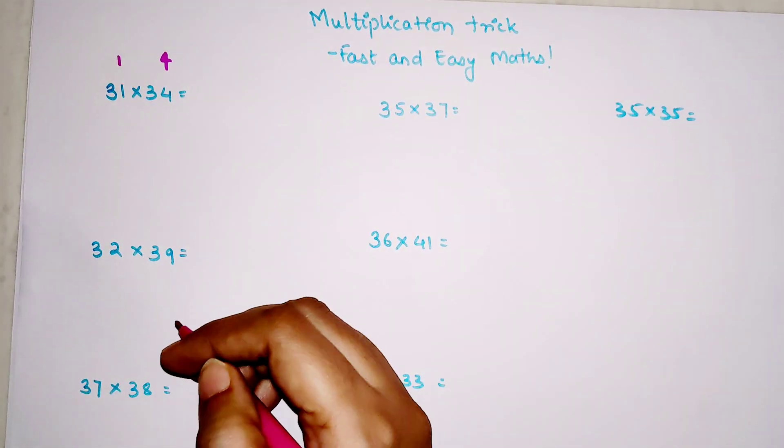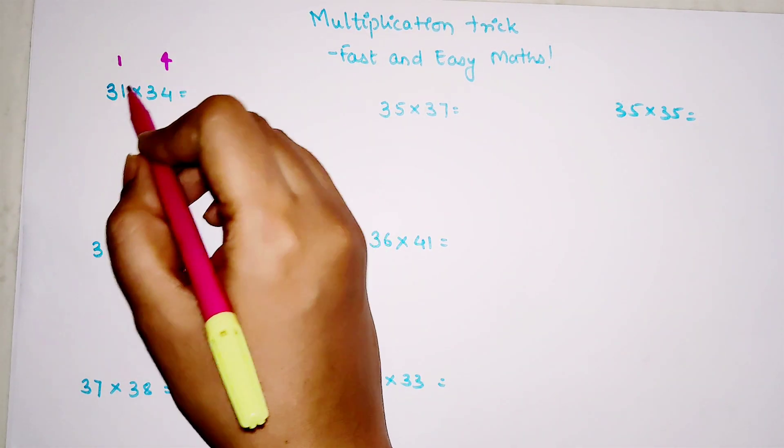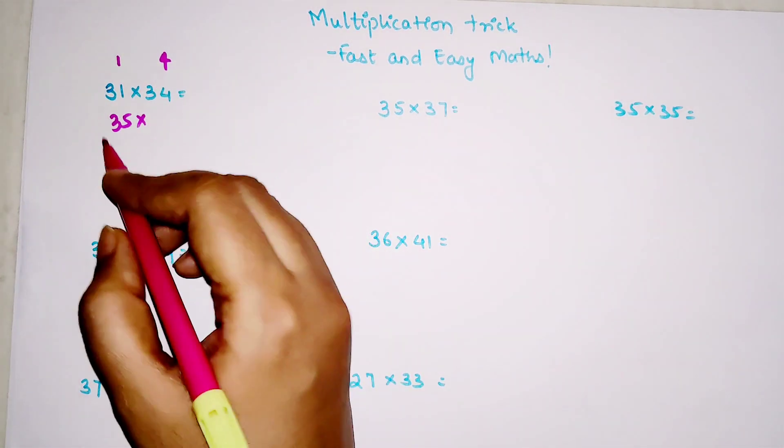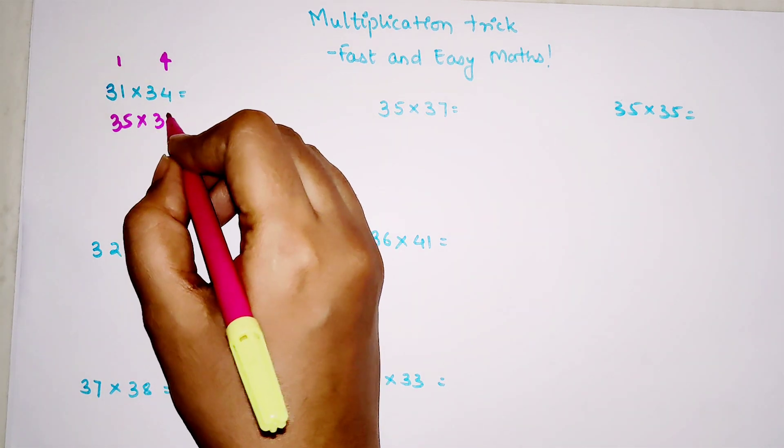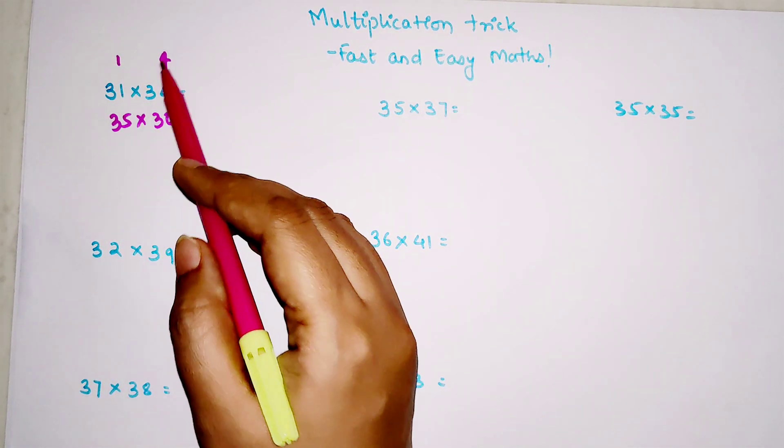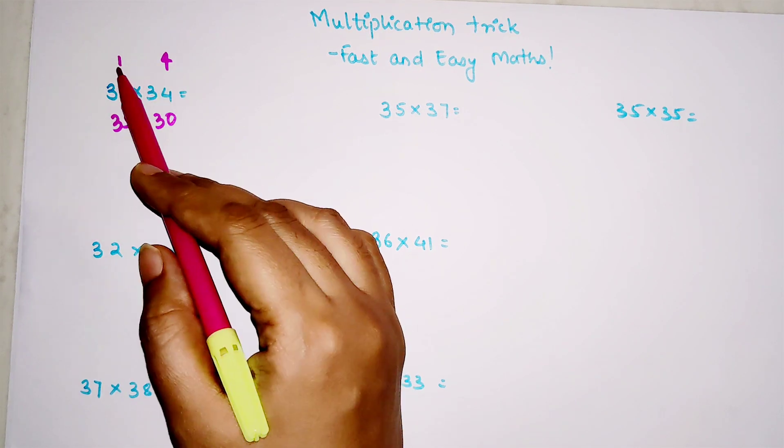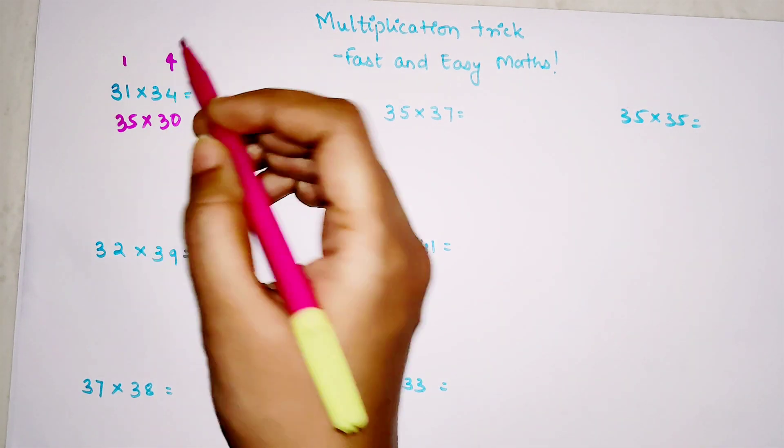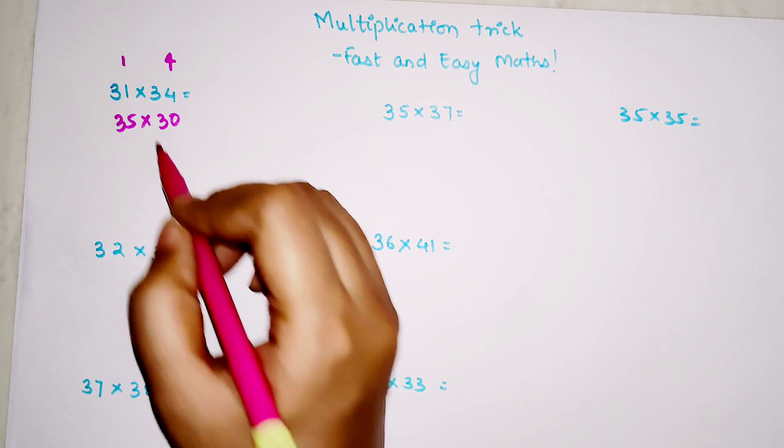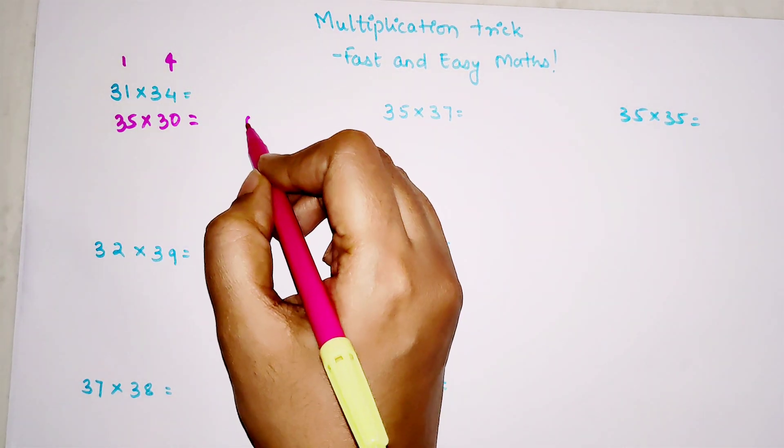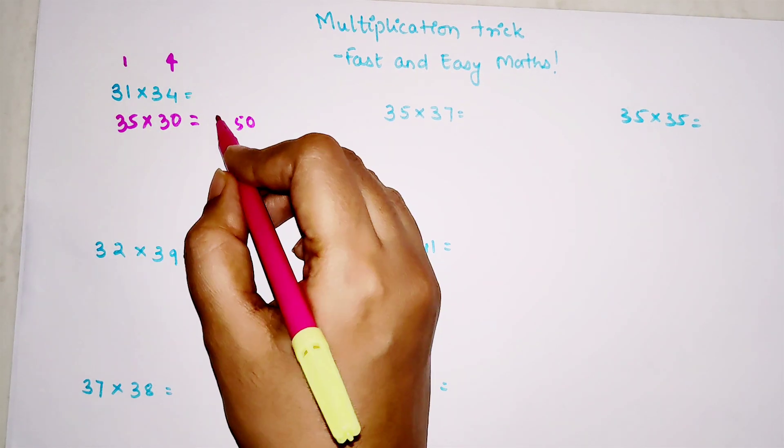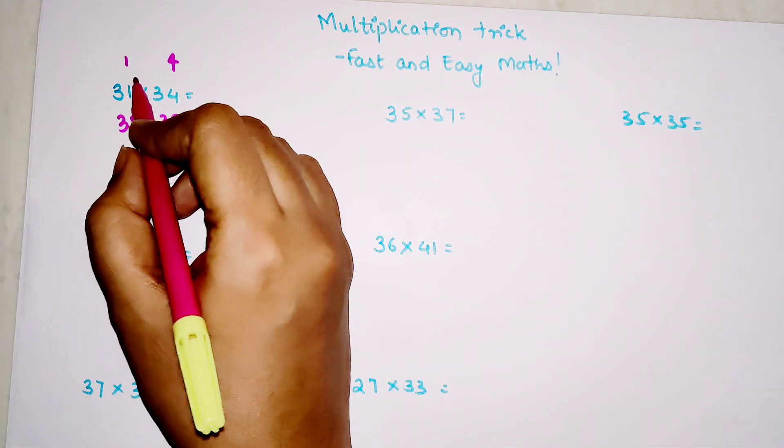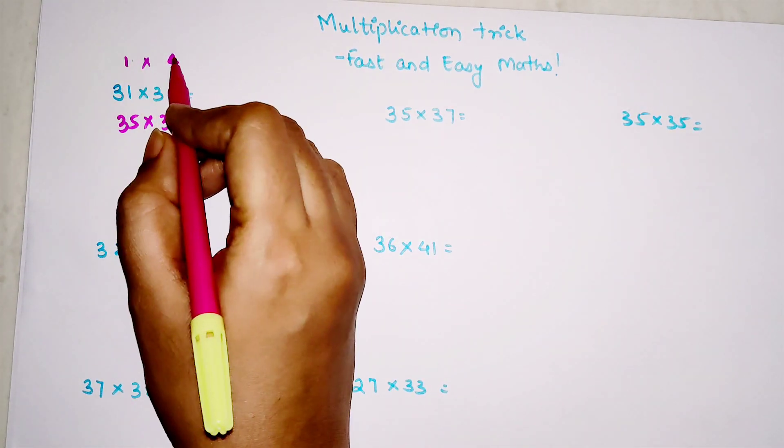For 31×34, this is 1 away from 30 and 34 is 4 away from 30. Now you cross add, meaning 31 will get added by 4, so 31 plus 4 gets you 35. Whatever number you get will get multiplied by 30. So 35 into 30 gets you 1050. This is not your final answer because you're going to do the product of these two differences. 1 into 4 gets you 4, and we add 1050 to 4. So your final answer will be 1054.